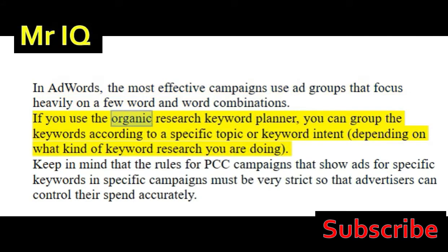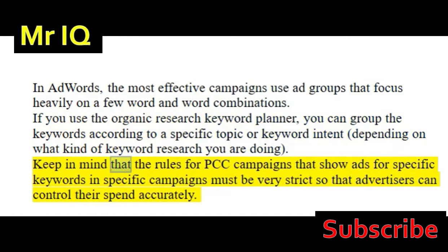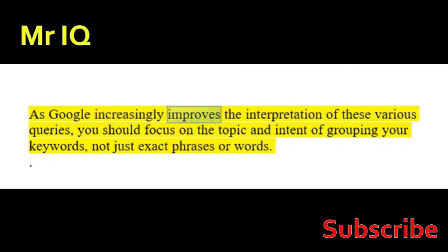If you use the organic research keyword planner, you can group the keywords according to a specific topic or keyword intent depending on what kind of keyword research you are doing. Keep in mind that the rules for PPC campaigns that show ads for specific keywords must be very strict so that advertisers can control their spend accurately. As Google increasingly improves the interpretation of various queries, you should focus on the topic and intent of grouping your keywords, not just exact phrases or words.